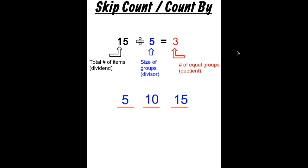Now I'm going to show you another example of skip counting when the unknown is the divisor instead of the quotient.